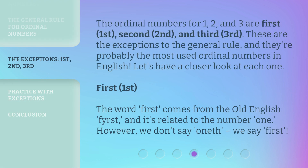The ordinal numbers for one, two, and three are 'first,' 'second,' and 'third.' These are the exceptions to the general rule, and they're probably the most used ordinal numbers in English. Let's have a closer look at each one.